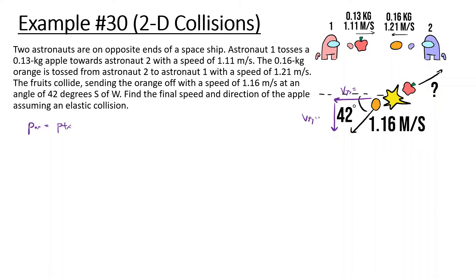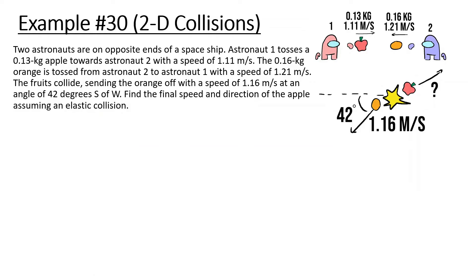For the orange's final velocity: 1.16 times cosine of 42 gives 0.86 m/s in the x direction, and 1.16 times sine of 42 gives 0.78 m/s in the y direction. So the orange's final x-component is 0.86 m/s and y-component is 0.78 m/s.